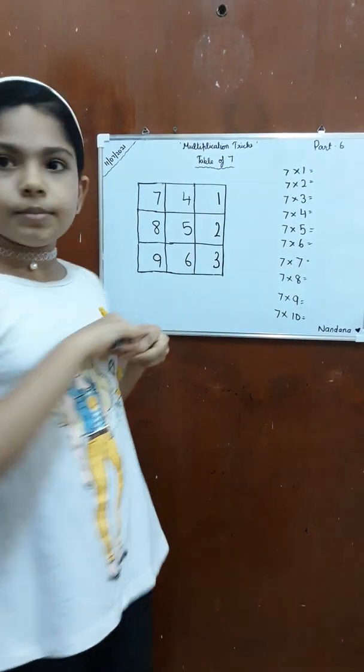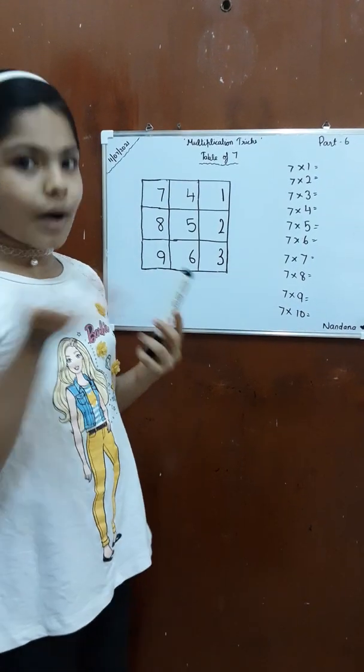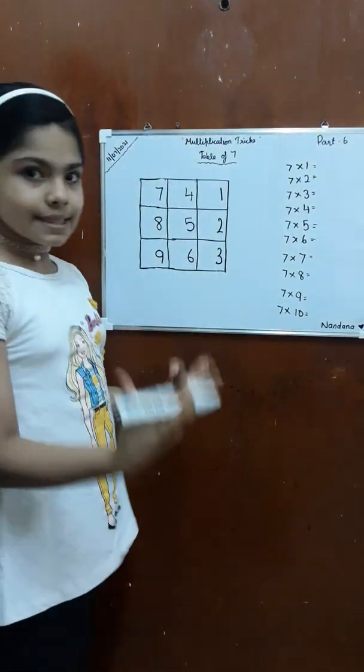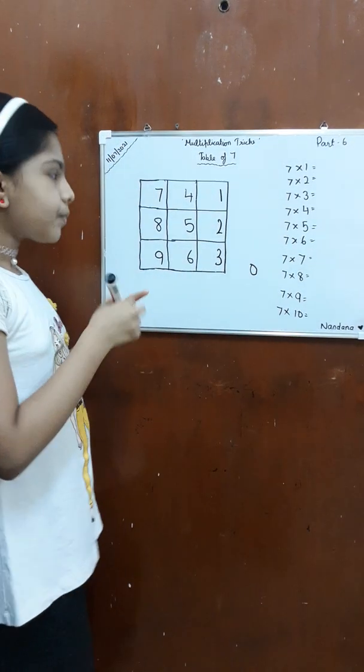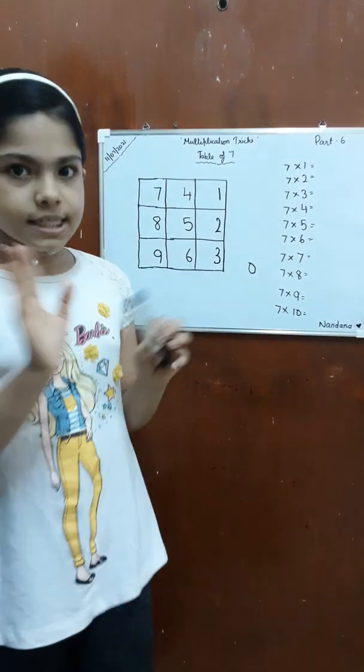So these numbers are going to be the ones place. Before we start the next step, let's write the number 0 beside the box. Okay, so our first step is done.